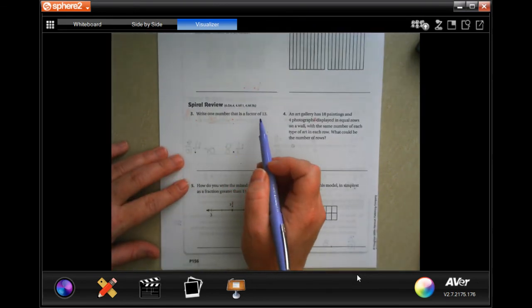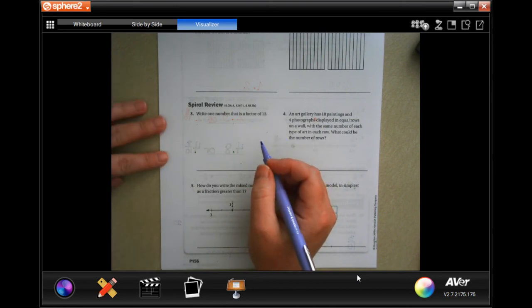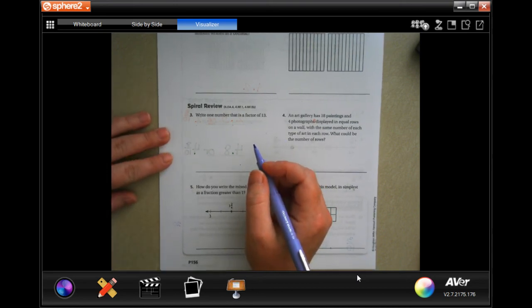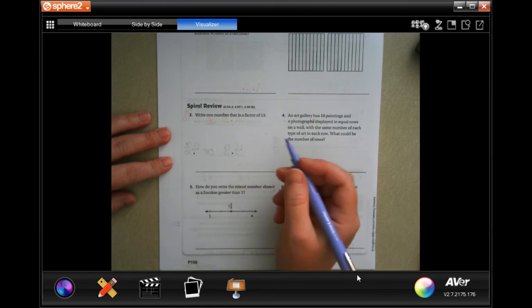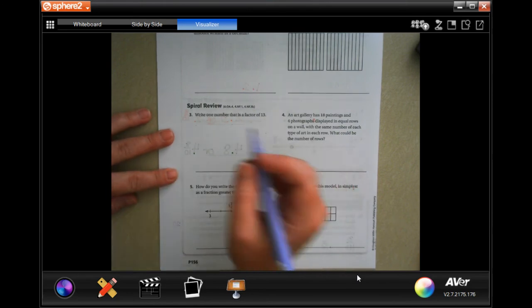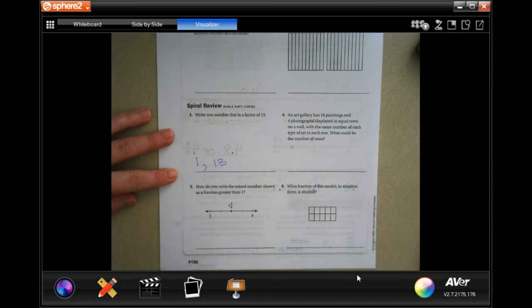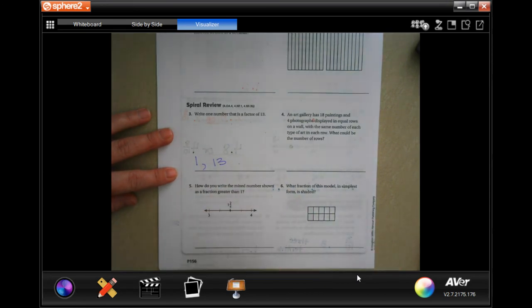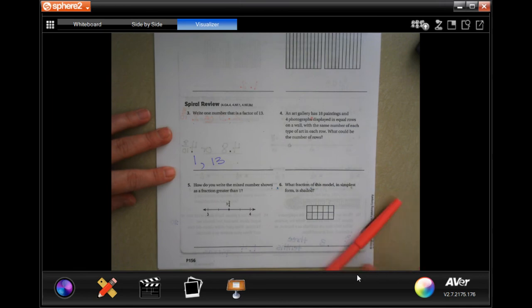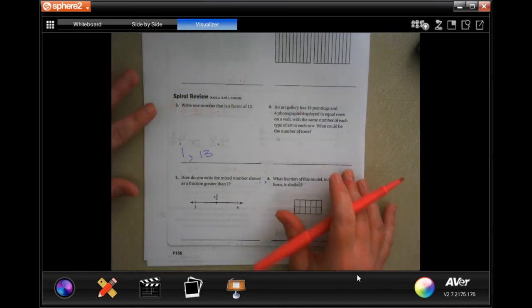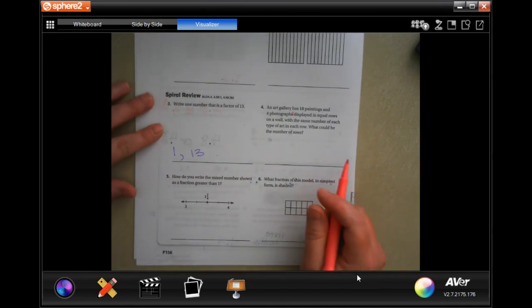Write one number that is a factor of 13. Well, 13 is a prime number, so the only numbers that make up 13 are one or 13. That's it guys, these are the only two numbers you can have. You can just write one of them, but you have to have one of those two.